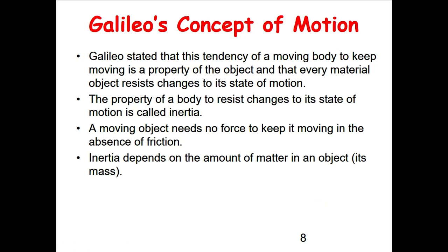So according to Galileo, the tendency of a moving object to keep moving is a property of the object, and every material object would resist any change to its state of motion. A property of a body is to resist changes to its state of motion, and he called this property inertia. A moving object needs no force to keep it moving in the case of no friction, because its inertia would maintain its movement. Inertia depends on the amount of matter in the object, or what we call mass.